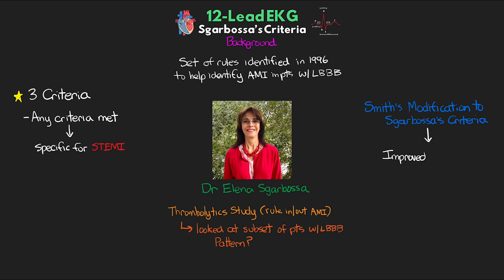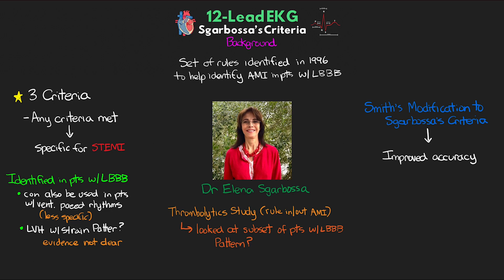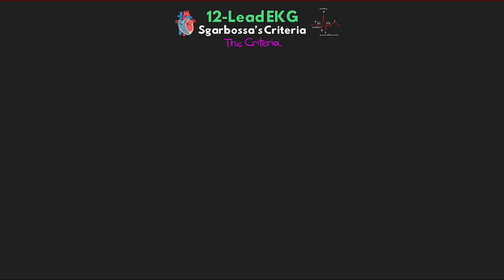This modification helped to improve the accuracy of these criteria. One thing to note is that this criterion was identified in patients with left bundle branch block. Subsequently, it was determined that it can also be used in patients with ventricularly paced rhythms, however it is less specific. There's also been some speculation about it being beneficial in patients with left ventricular hypertrophy with a strain pattern, but the evidence isn't as clear, and Dr. Smith has commented that it needs further investigation. The important takeaway is that just because these criteria are not present does not mean you can rule out STEMI.